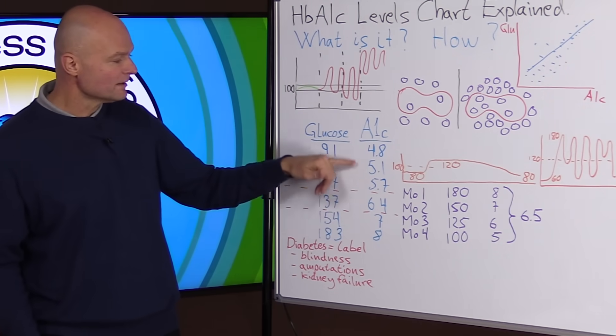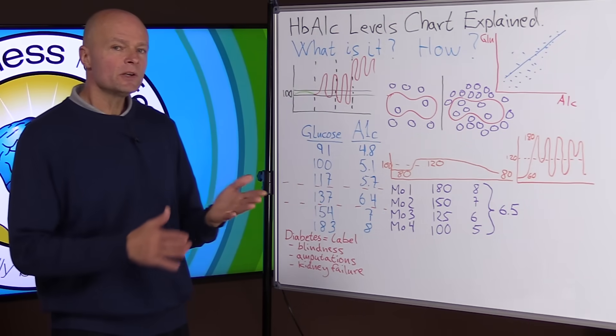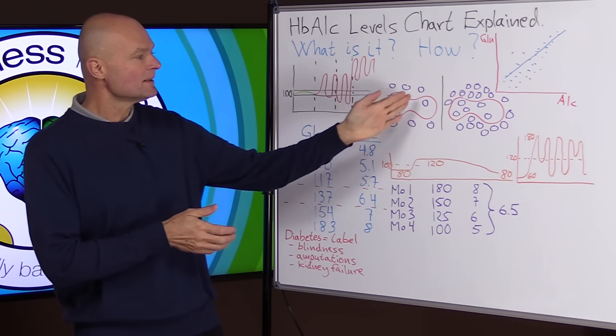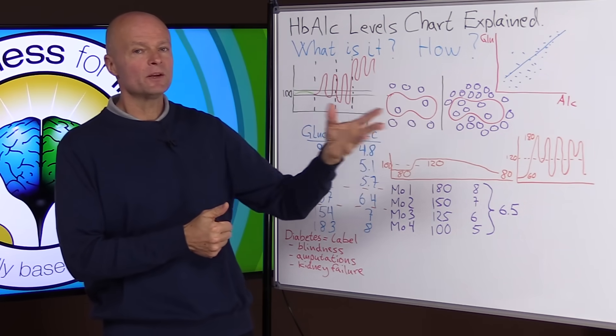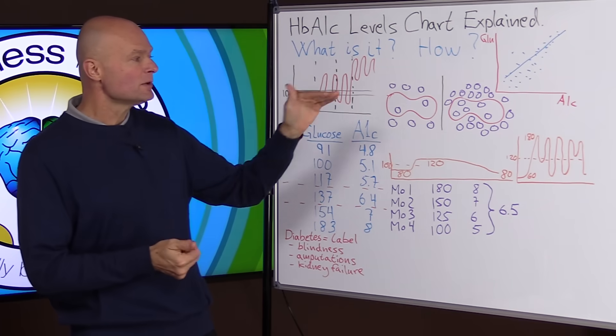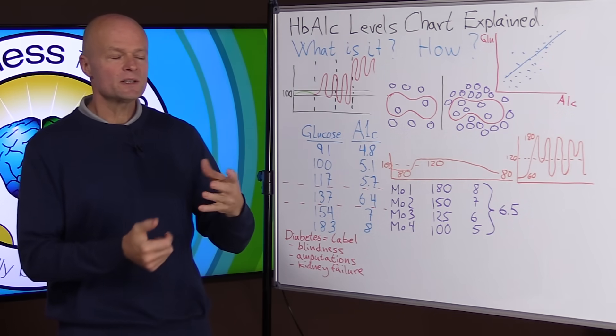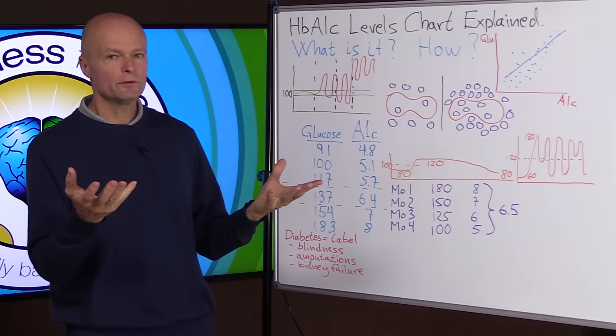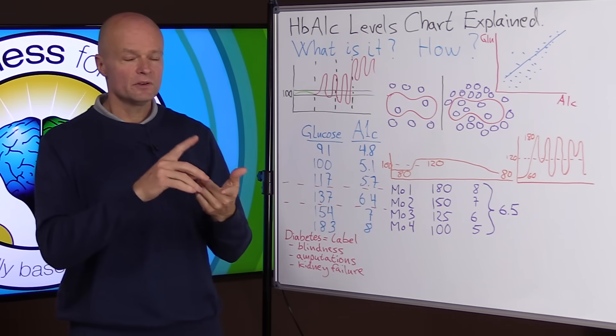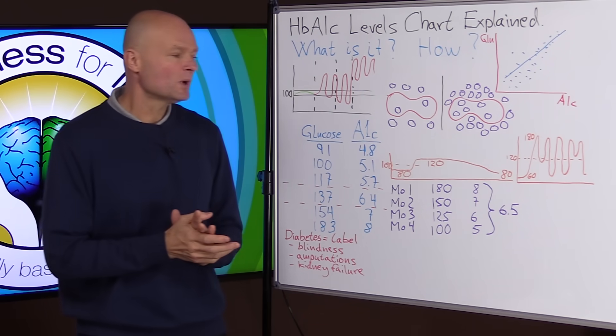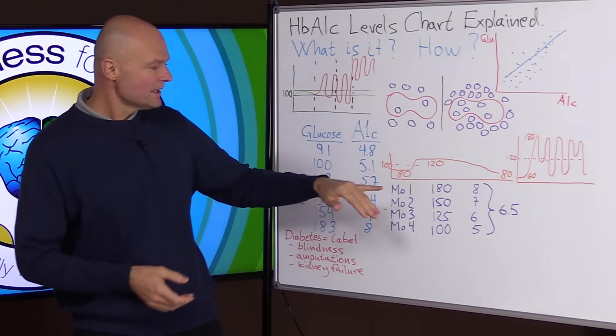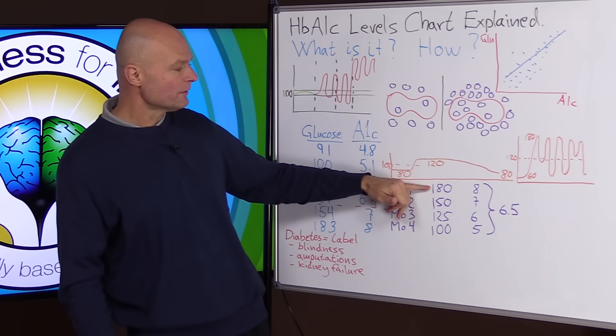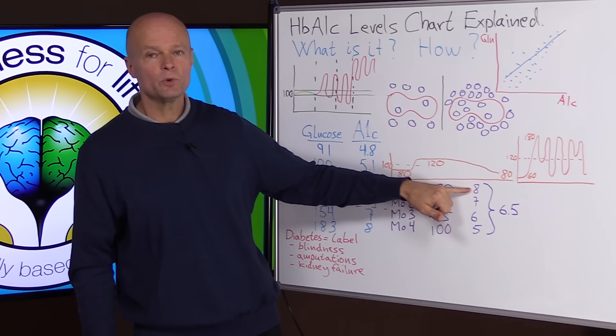And the other thing to understand about A1C is that because these blood cells live about 3 to 4 months, these values don't change very quickly. So if someone says, how do I bring down my A1C as fast as possible? Well, you start eating real food. You avoid the sugar and the starches. But it's still going to take a while because let's say you start off with a blood sugar of 180. And if you kept it there for a while, then your A1C would be about 8.